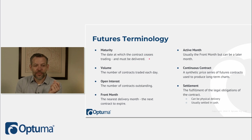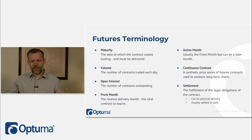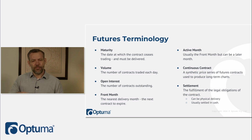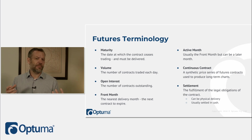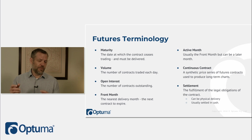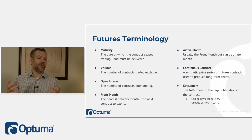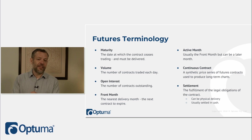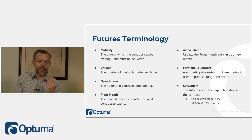Volume is the number of contracts traded each day. Open interest is the number of contracts outstanding. When a farmer writes a new contract with a buyer, open interest increases. But if the farmer sells that contract to a speculator, open interest doesn't change — that's just a transfer. Open interest only increases as new contracts are written, and drops as contracts are fulfilled. That's the key difference between volume and open interest.